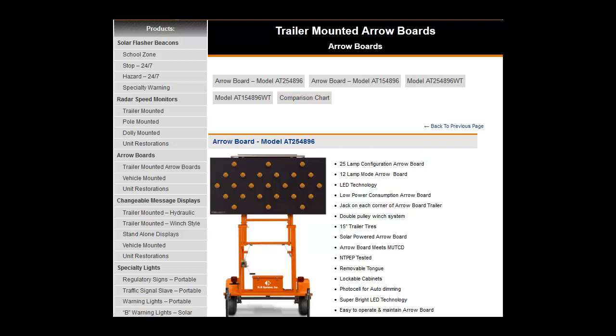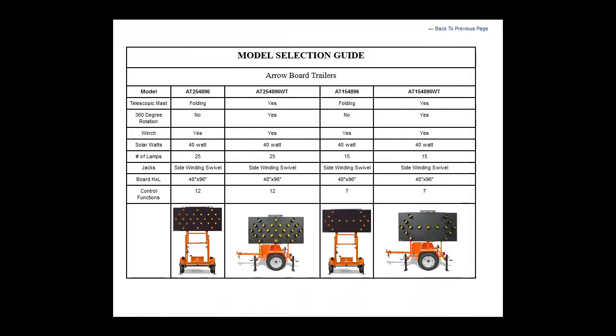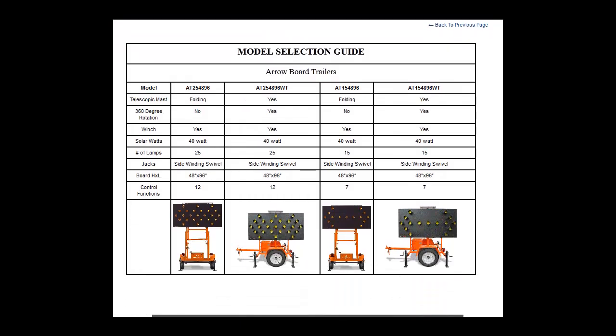Let's go to the comparison chart so we can determine which system is right for you. Our aero boards come in two different lamp configurations: 25 and 15. This determines what and how many functions the aero board can perform.